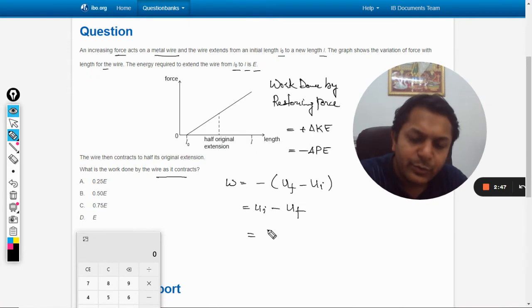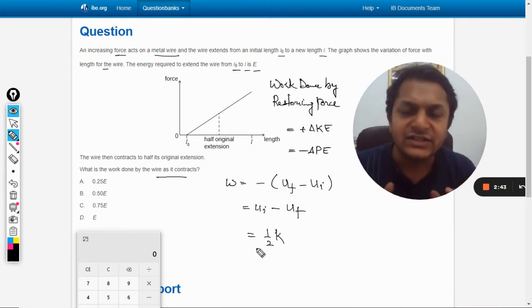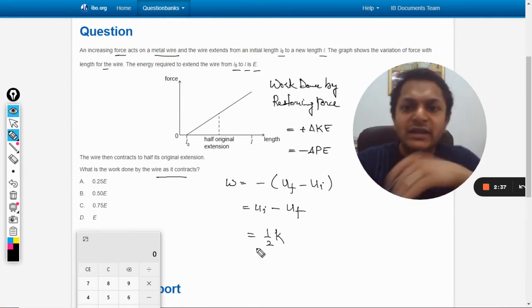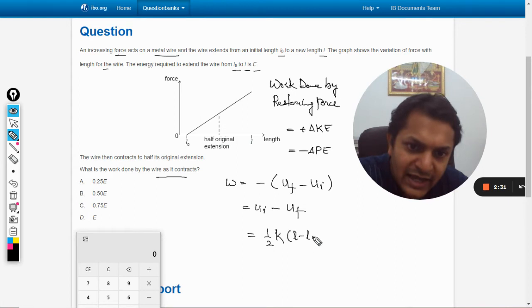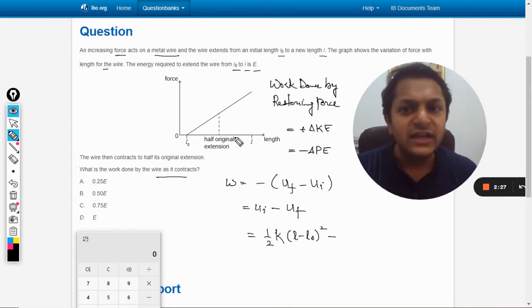The potential energy initial will be half k x squared, where x is the total extension in the wire. In the first case, the extension is L minus L naught, so it will become half k times (L minus L naught) squared.